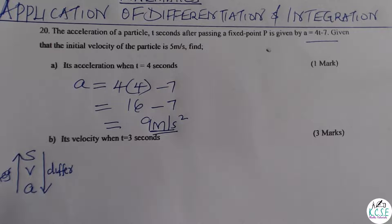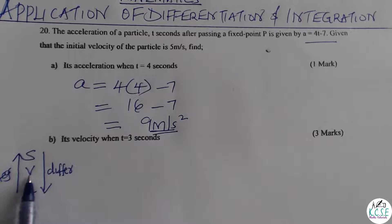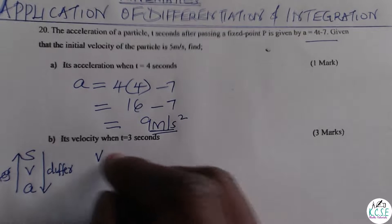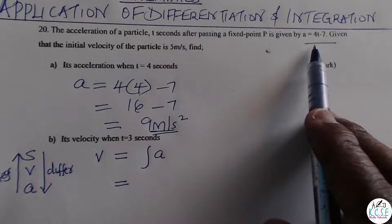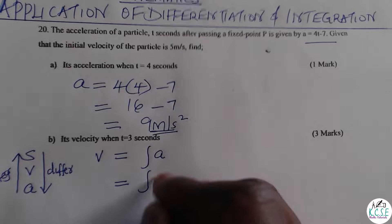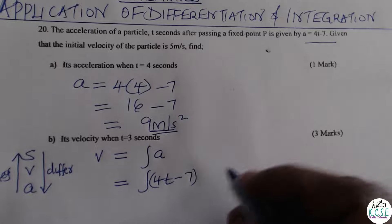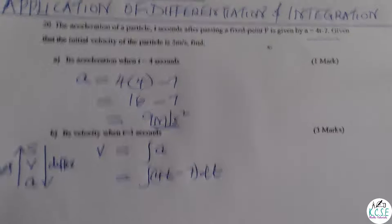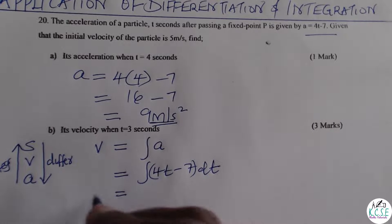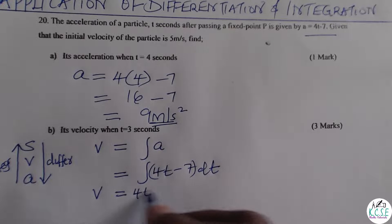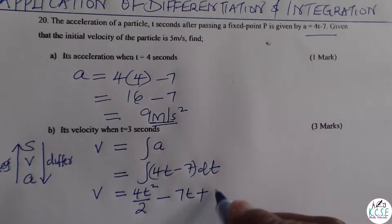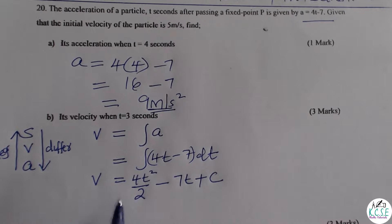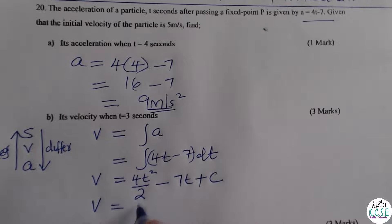In this case, you're given acceleration and required to get velocity, so you integrate. The expression for acceleration is A equals 4t minus 7. Integrating with respect to t: integrate 4t to get 4t squared divided by 2, integrate negative 7 to get negative 7t, then add the constant of integration. This simplifies to v equals 2t squared minus 7t plus c.